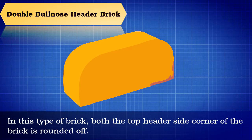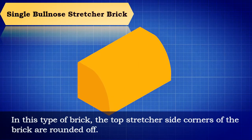Double bullnose header brick: in this type of brick, both the top header side corners of the brick are rounded off. Single bull-nose stretcher brick: in this type of brick, the top stretcher side corners of the brick are rounded off.